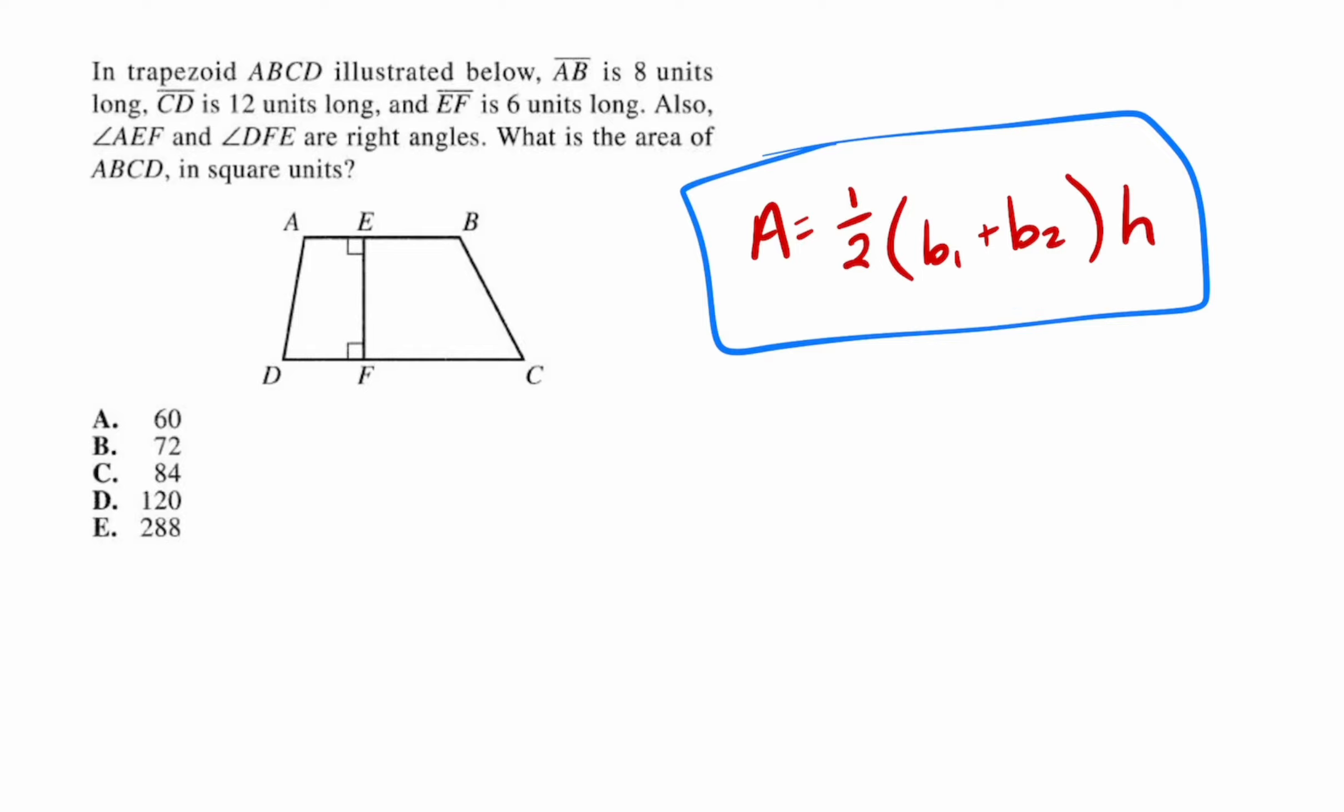First off, you've got to know what the bases and the height are. In a trapezoid, the two parallel sides are what we call the bases. So here's one base and here's another. You can call one of them base one and one of them base two - it doesn't matter which one is which. The bases are the two parallel sides.